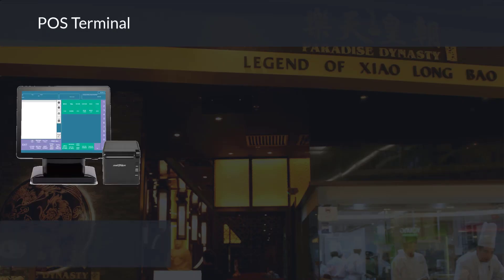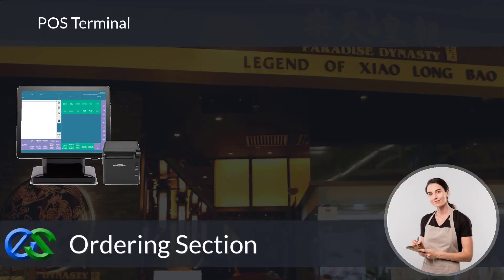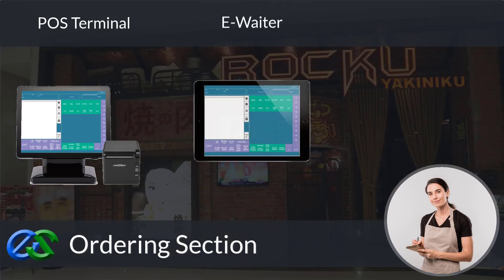You may add an ordering terminal for your floor staff to place orders. The receipt printer is for printing out the customer's present bill for payment collection. Besides the ordering terminal, the E-Waiter concept allows your floor staff to place orders through a mobile tablet directly.